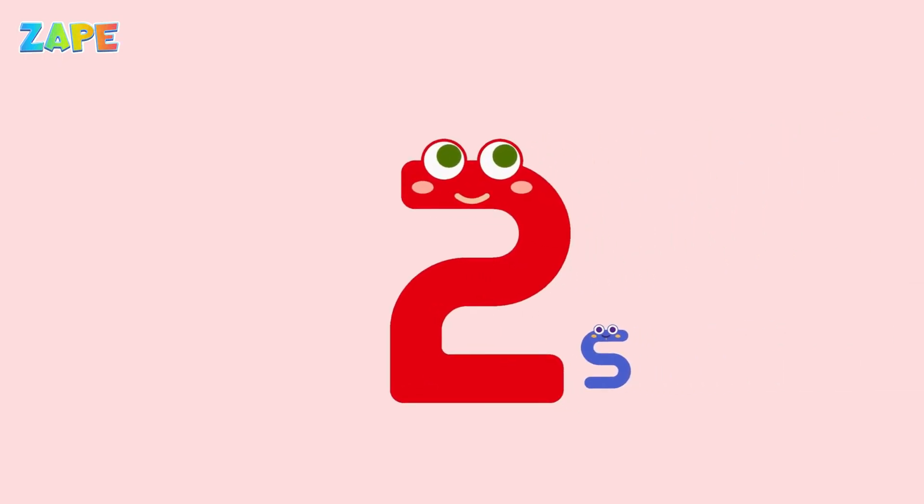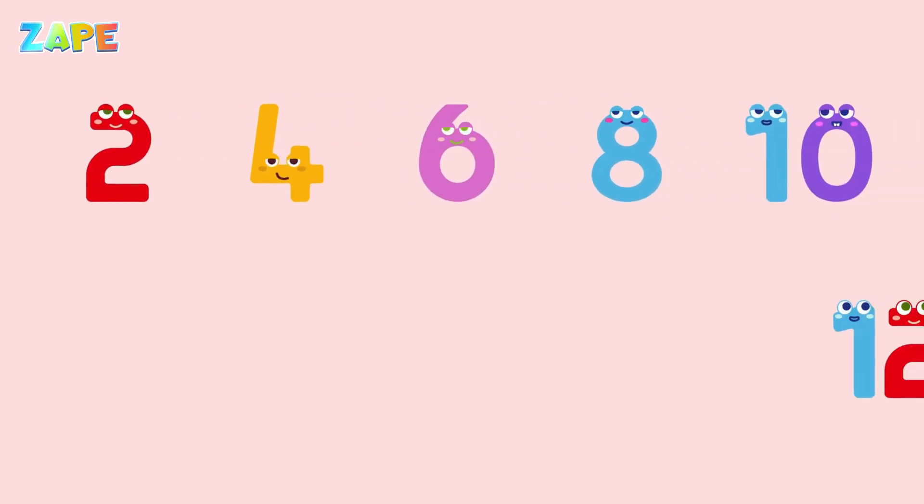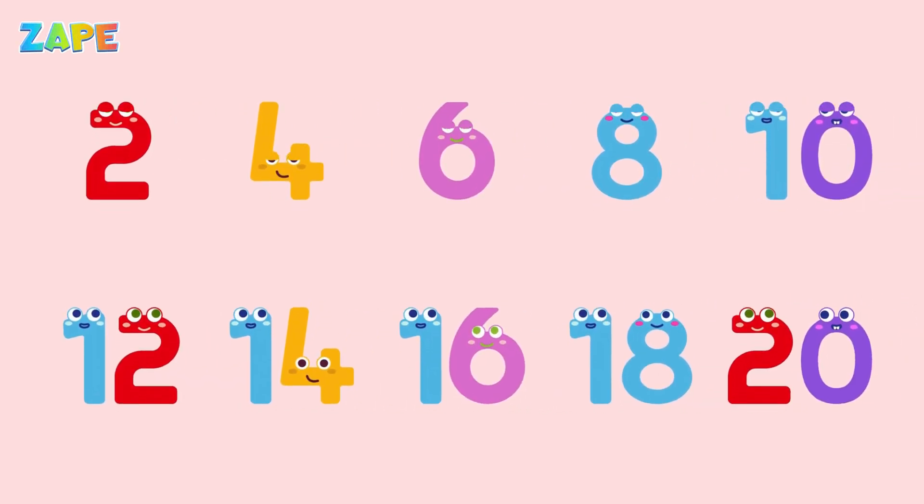Let's begin with counting by twos. That means we skip one number each time. Let's count together.